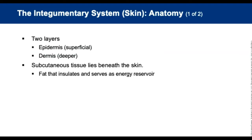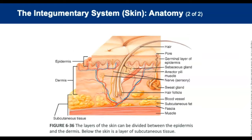Now we'll discuss the integumentary system. There are two layers of the skin. The epidermis is the superficial layer that seals the body and makes it watertight, composed of layers including the germinal layer and stratum corneum; skin cells are constantly being replaced. The dermis is deeper and contains the sweat glands, sebaceous glands, hair follicles, blood vessels, and mucous membranes. Below the skin lies subcutaneous tissue — a layer of fat that serves as an insulator and energy reservoir.